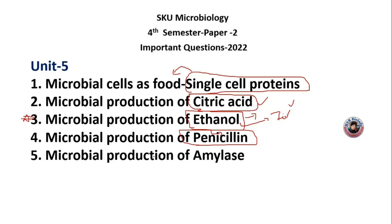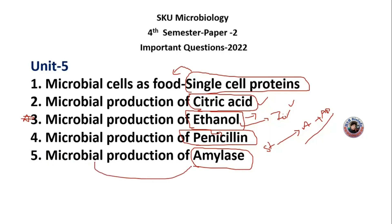Coming to the last question: microbial production of amylase. Amylase is an enzyme very essential for the breakdown of starch. When amylase reacts, it is converted into amylopectin and is involved in digestion. It is very important to produce using microbes. In summary, key microbial products include citric acid, ethanol, penicillin, antibiotic, and amylase enzyme.